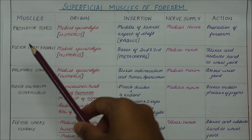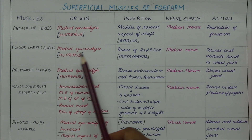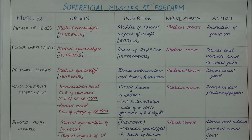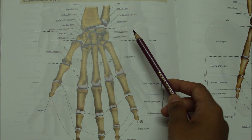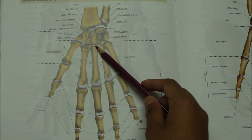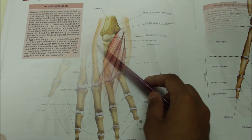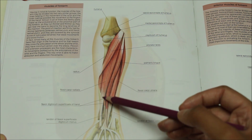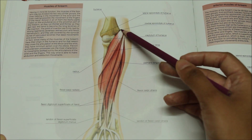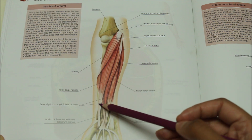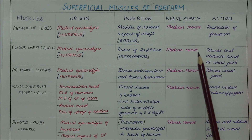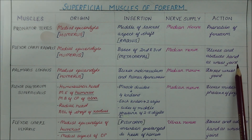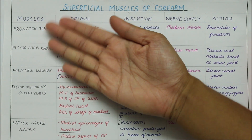Moving on to the next muscle, we have the flexor carpi radialis. It originates from the medial epicondyle of the humerus. It inserts into the base of the second and third metacarpals. It is supplied by the median nerve. The action of the flexor carpi radialis is that it flexes and abducts the hand at the wrist joint.